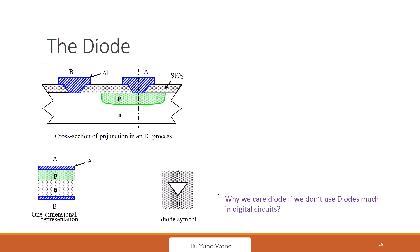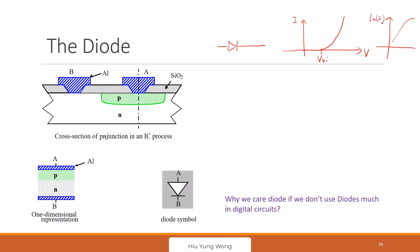Now I will go to the diode. Before any questions, a diode is very simple. What is a diode? A diode is basically just a PN junction. Some of the properties we need to reinforce. We know that at a certain bias V_bi, the current increases a lot. If you put it on a log scale, it looks like this — before V_bi it goes up exponentially.